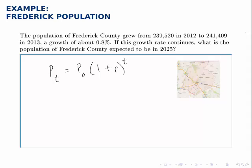Here's the general exponential growth model. The population or amount at any given point in time is the initial population or initial amount times the quantity 1 plus the growth rate — written as a decimal — raised to the power of t, or the number of time periods since the initial point. This formula gives us some choices.